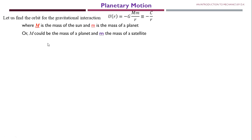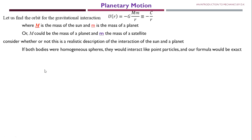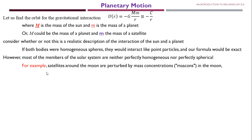Consider whether or not this is a realistic description of the interaction of the Sun and a planet. If both bodies were homogeneous spheres, they would interact like point particles and our formula would be exact. That means if the planet or particles have homogeneous spherical symmetry, we can use this formula and find the answer very easily. But most members of the solar system are neither perfectly homogeneous nor perfectly spherical, so we will not be able to find the answer very easily.